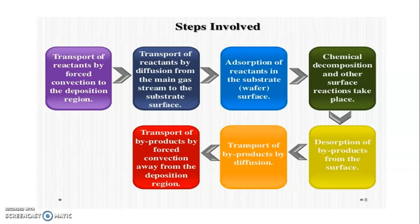The steps involved in CVD — there are seven steps. The first step is transport of reactants by forced convection to the deposition region. Second, transport of reactants by diffusion from the main gas stream to the substrate surface. Third, absorption of reactants on the substrate surface. Fourth, chemical deposition and surface reactions take place. Fifth, desorption of by-products from the surface. Sixth, transport of by-products by diffusion. Seventh, transport of by-products by forced convection away from the deposition region.